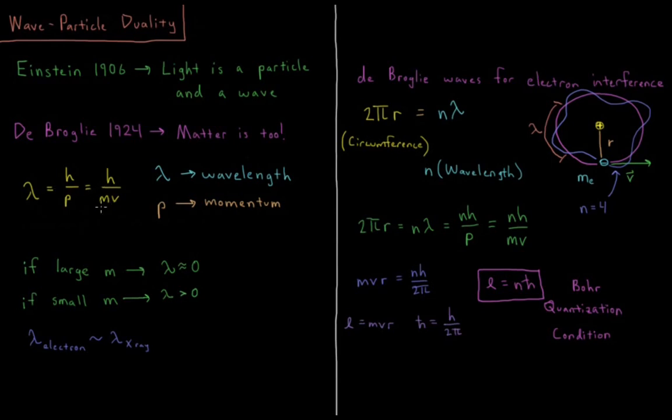By the time you get to something as light as an electron, even if it's traveling near the speed of light, which electrons typically are traveling some low percentage of the speed of light, that gets you up into a range where the wavelength of an electron is about the wavelength of an X-ray.